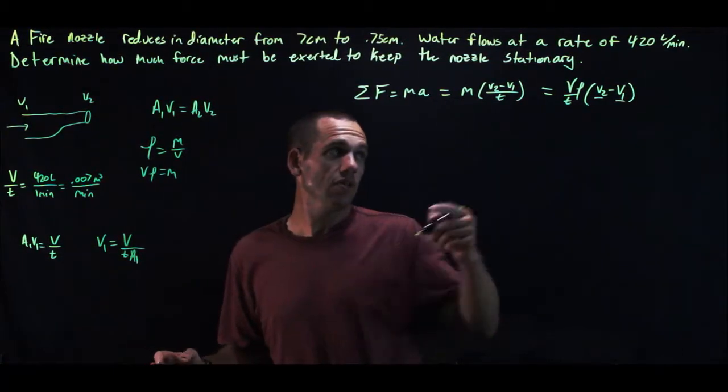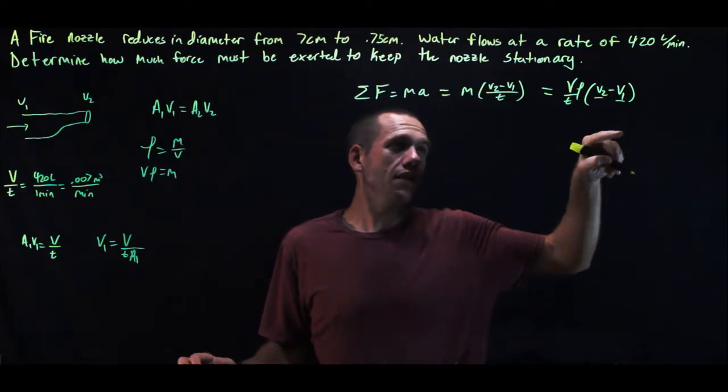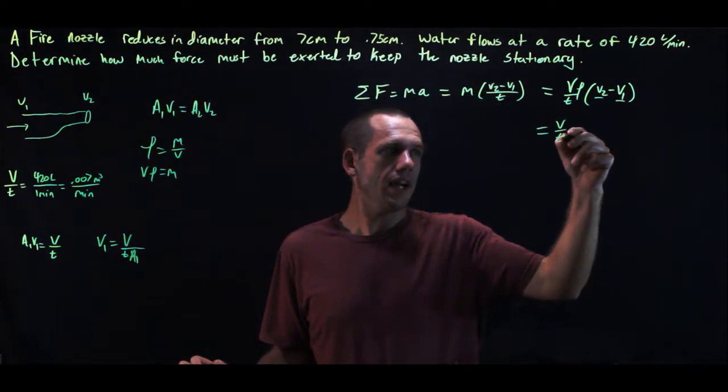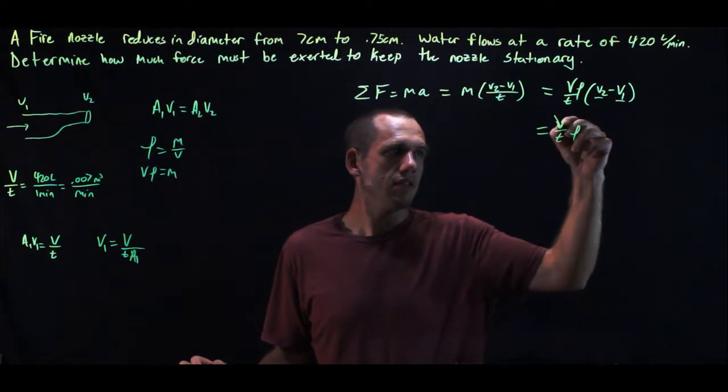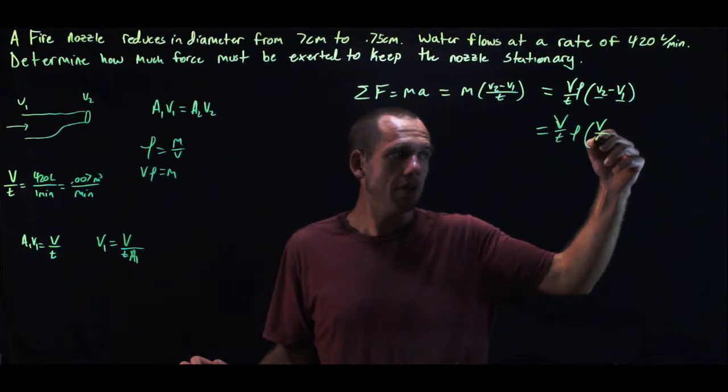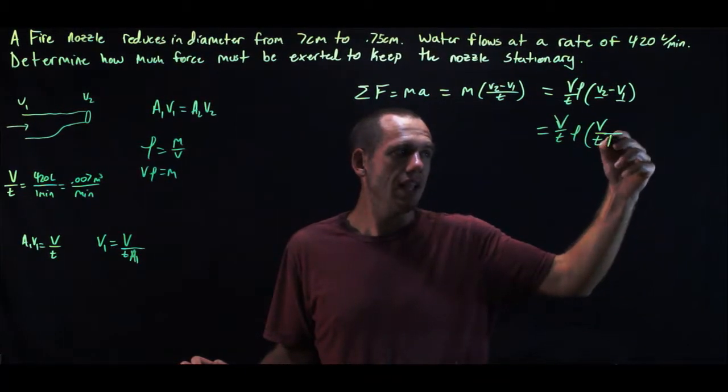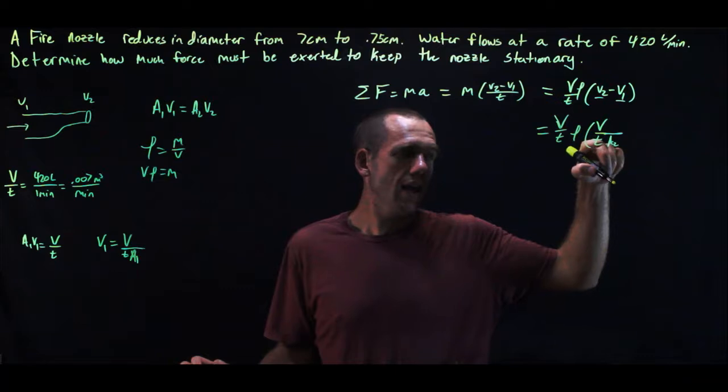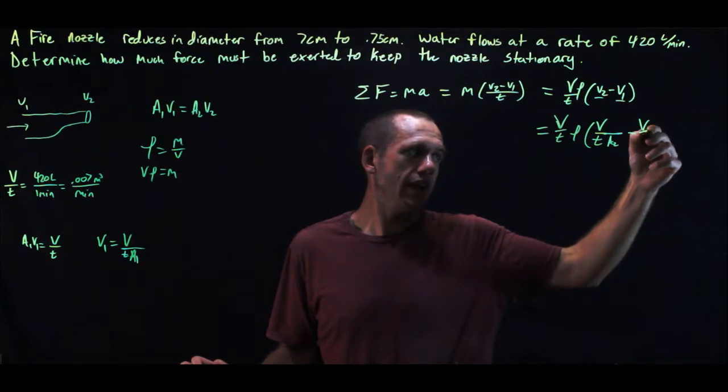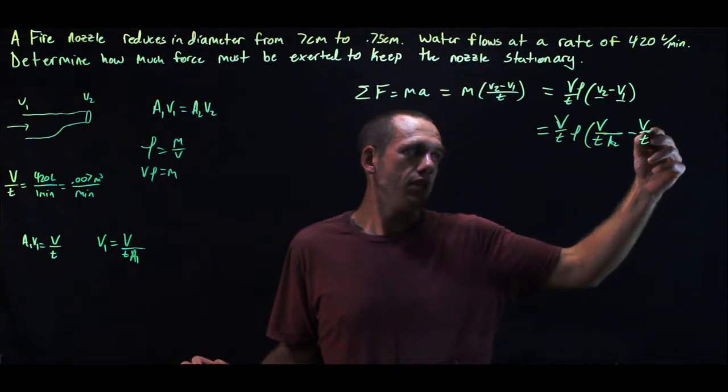And so what I can do is I can replace V2 and V1. So I'm going to go ahead and do that. So this is volume divided by time times density, times V2. But instead of V2, I'm going to use volume divided by time times A2. And instead of V1, I'm going to use volume divided by time times A1.